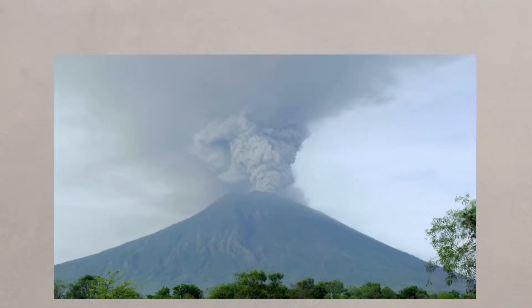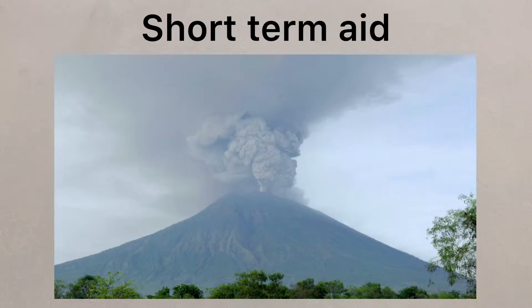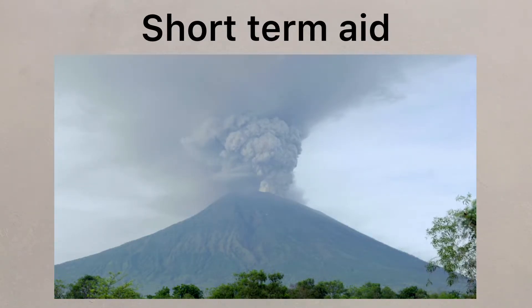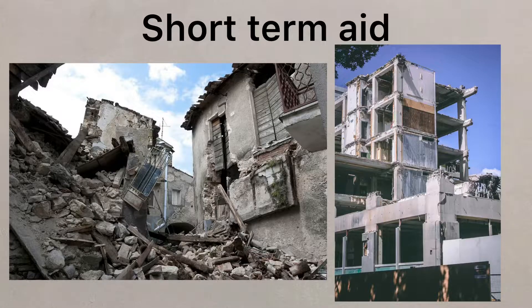Different types of aid are required for different circumstances. For example, short-term aid is used in emergencies where a quick response is needed to things like natural disasters. People might need food and shelter quickly following events like an earthquake.